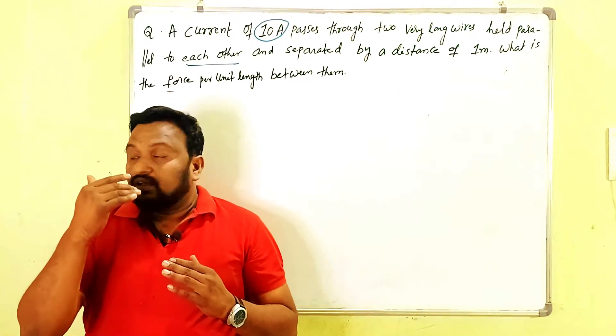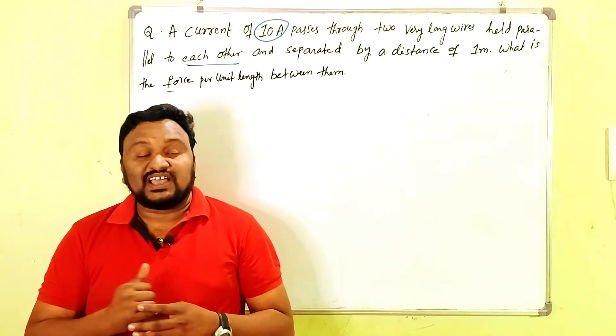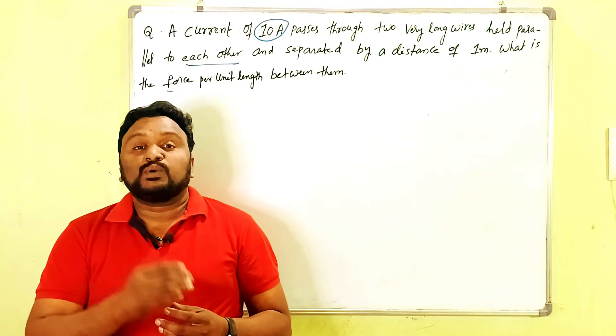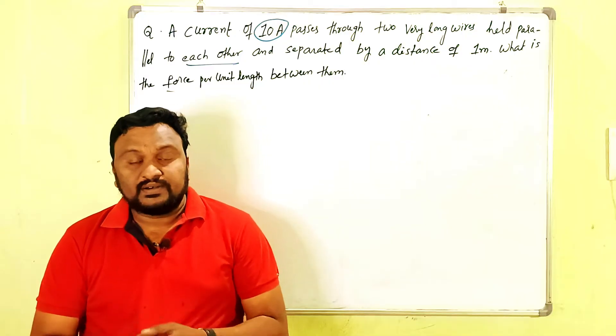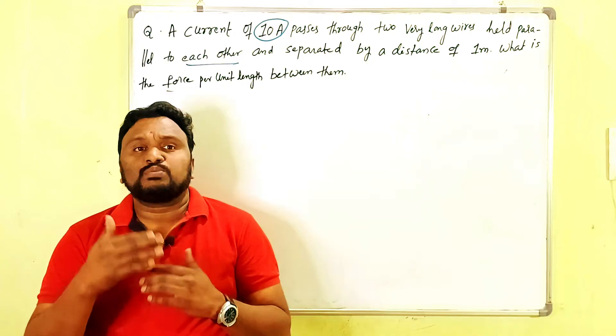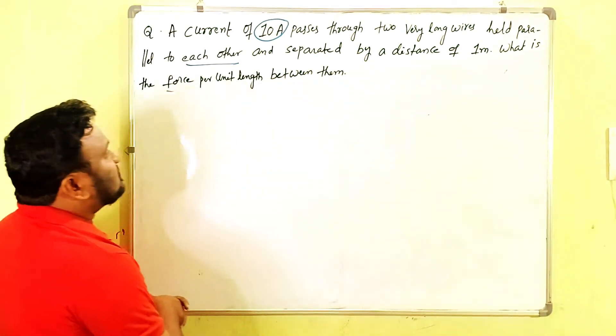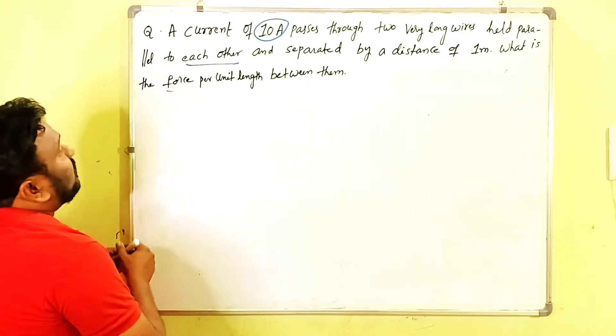This is the most important question in the chapter of moving charges and magnetism, and it was given for four marks. This question has been repeated so many times in so many examinations, that's why you should watch the video up to the last. The problem should be like this: a current of 10 ampere passes through two long wires held parallel to each other and separated by a distance of one meter.